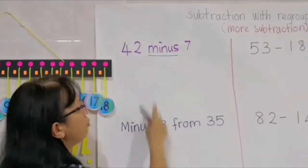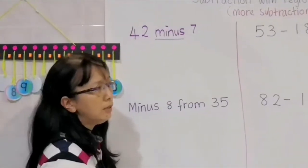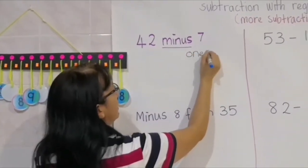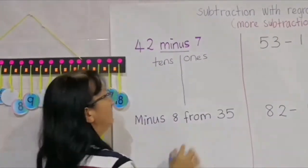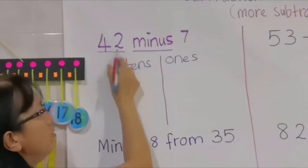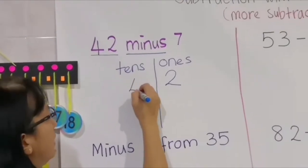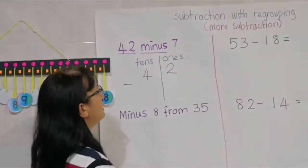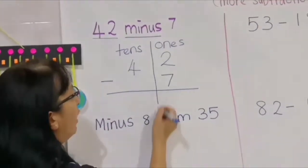First, we have to write the question in written method. You must understand how to write the number sentence into written method. When we write into written method, you have to know the place value of ones and the place value of tens. We want to write the number in the place value columns. Please remember, we always start from place value ones.